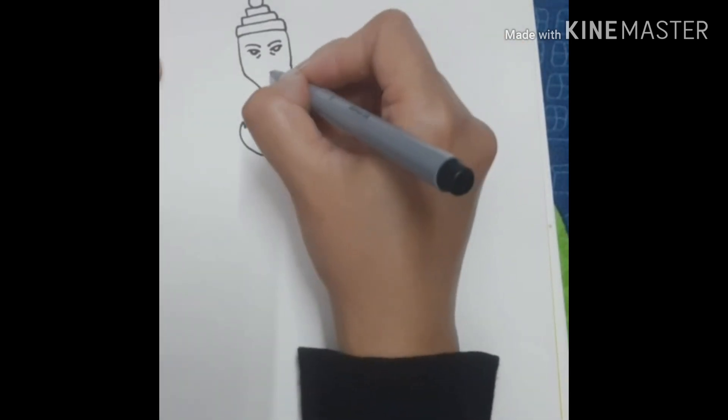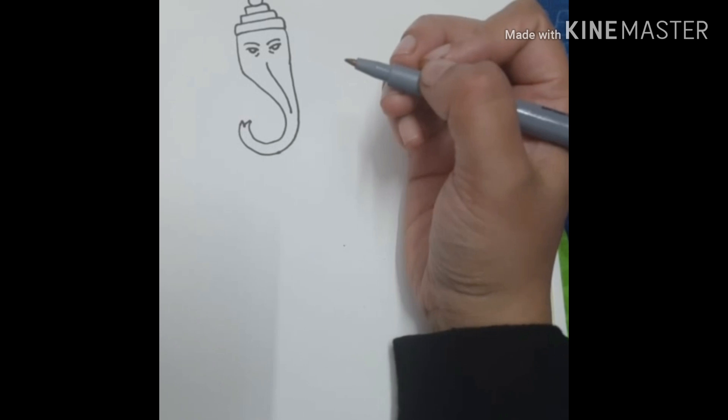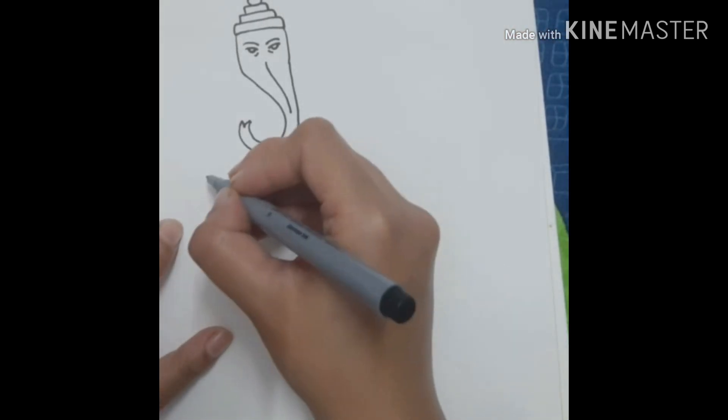For the eyes, I made two small lines. In this way, I made a small line for the trunk. Now Ganesha's face is ready.